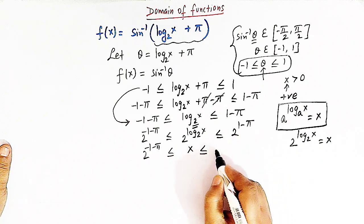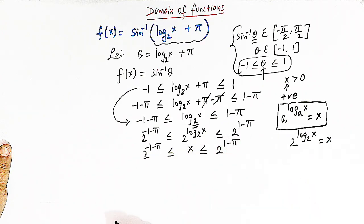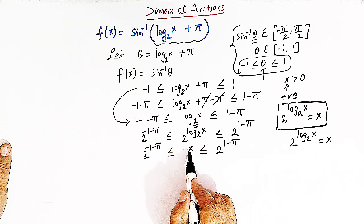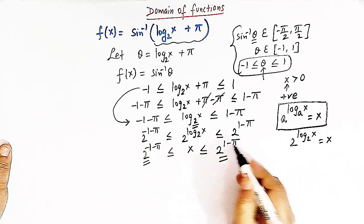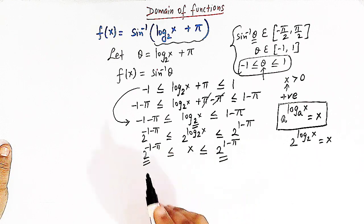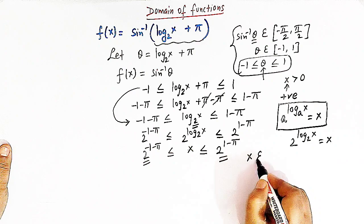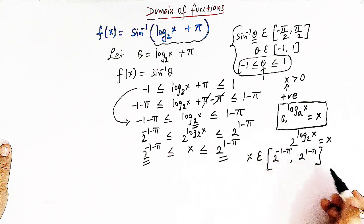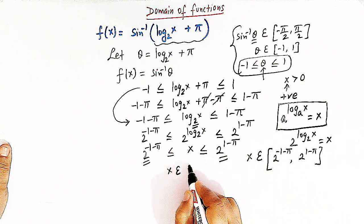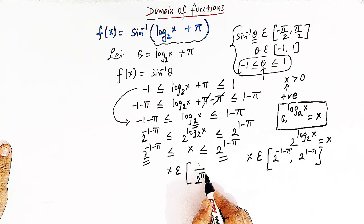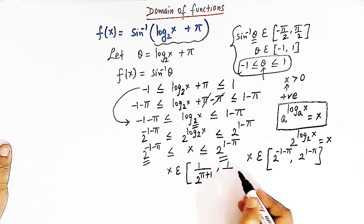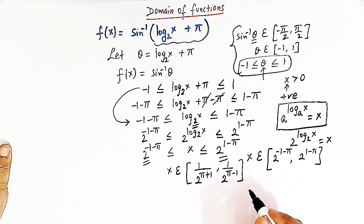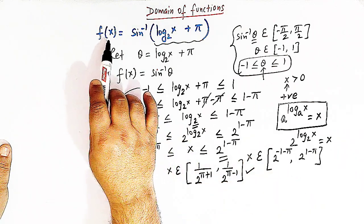So now we have: 2 raised to minus 1 minus pi is less than or equal to x, which is less than or equal to 2 raised to 1 minus pi. This inequality tells us that x should lie between these two numbers, including both endpoints — the interval is closed. So we can write x belonging to the closed interval from 2 raised to minus 1 minus pi to 2 raised to 1 minus pi, which can also be expressed as 1 over 2 raised to pi plus 1, to 1 over 2 raised to pi minus 1. This is the required domain of f of x.